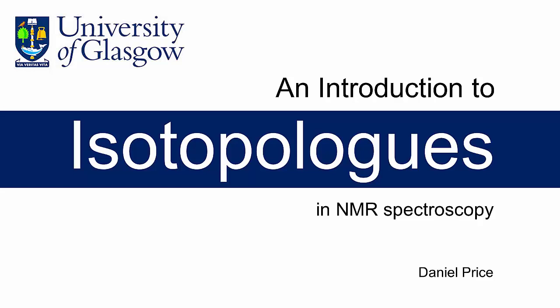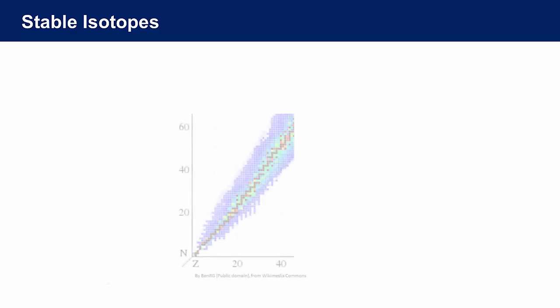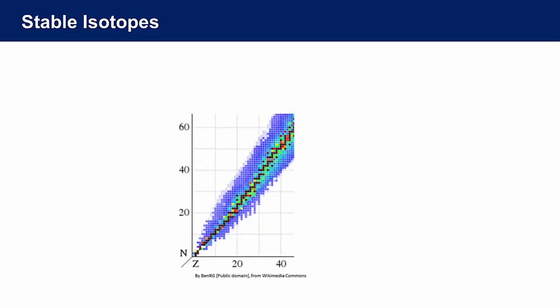The word isotopologue is related to the word isotope. Atoms are described as isotopic if they contain the same number of protons but different numbers of neutrons in their nuclei. Thus a particular element may exist with a number of different isotopic forms.